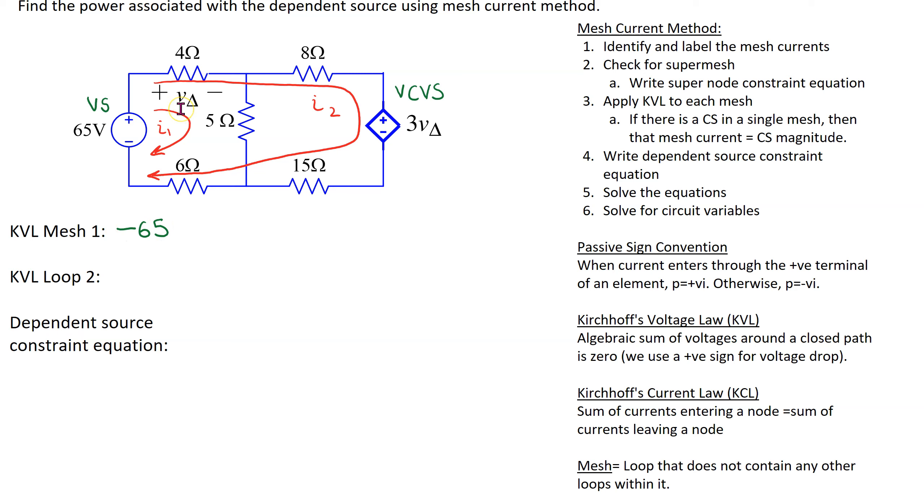Next we have a voltage drop across the 4 ohm resistor. In this circuit the current flowing through the 4 ohm resistor is I1 plus I2. Therefore this voltage drop is 4(I1 plus I2). Next we have the 5 ohm resistor and through this only mesh current I1 is flowing. So we get 5 I1.